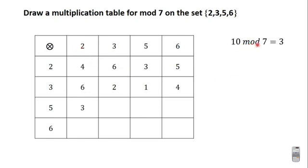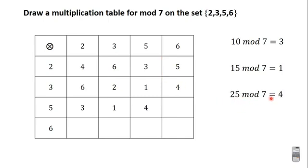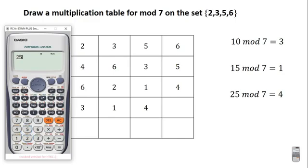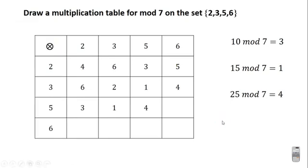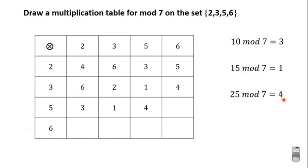Moving on to the next row. 5 × 2 is 10, and 10 mod 7 is 3 — subtract 7 from 10 to get 3. 5 × 3 is 15, and 15 mod 7 is 1 — subtract 7 from 15 to get 8, then subtract 7 from 8 to get 1. You keep subtracting until you get a value smaller than the modulus. 5 × 5 is 25, and 25 mod 7 is 4 — subtract 7 from 25 to get 18, then 11, then 4.